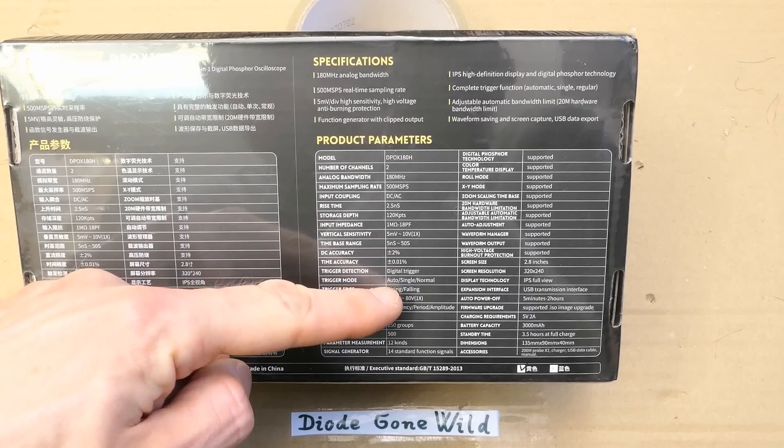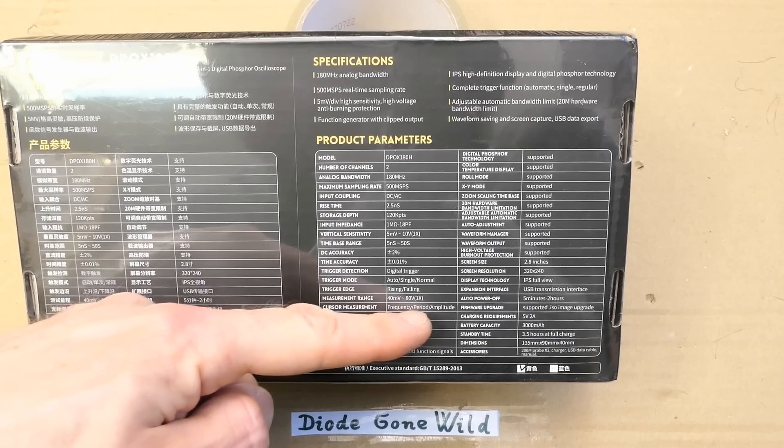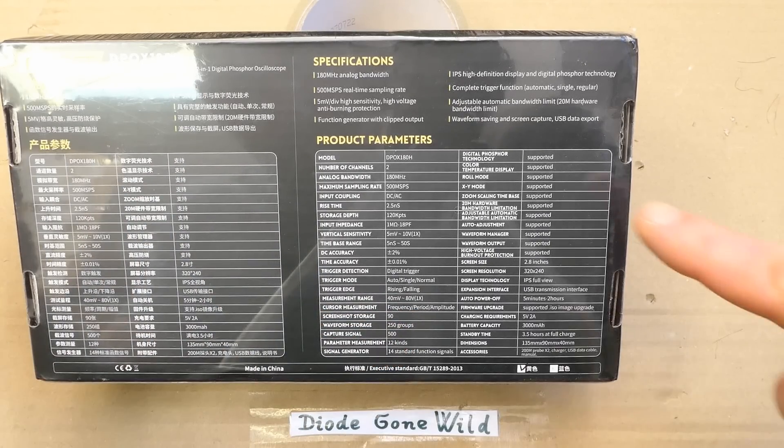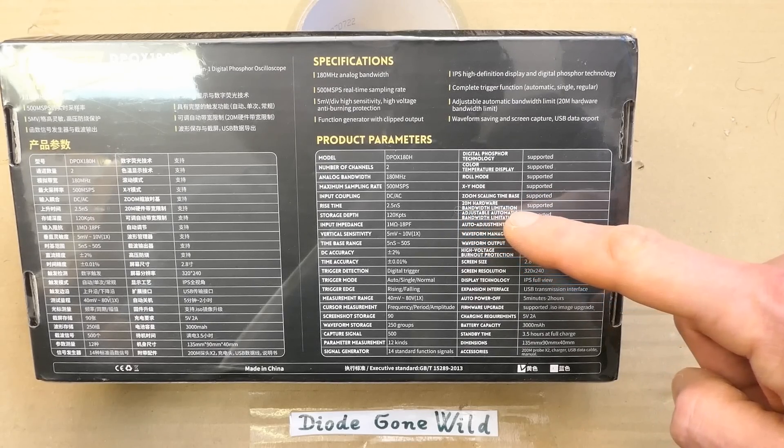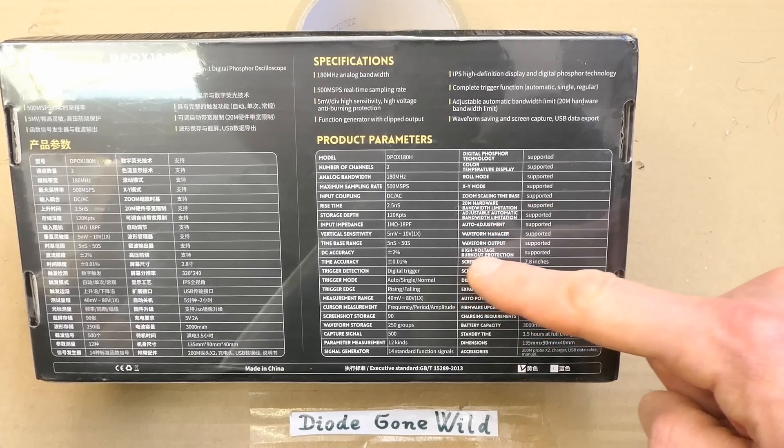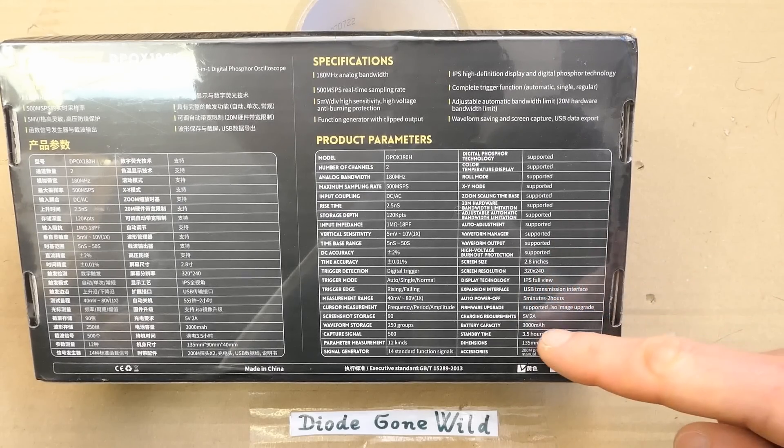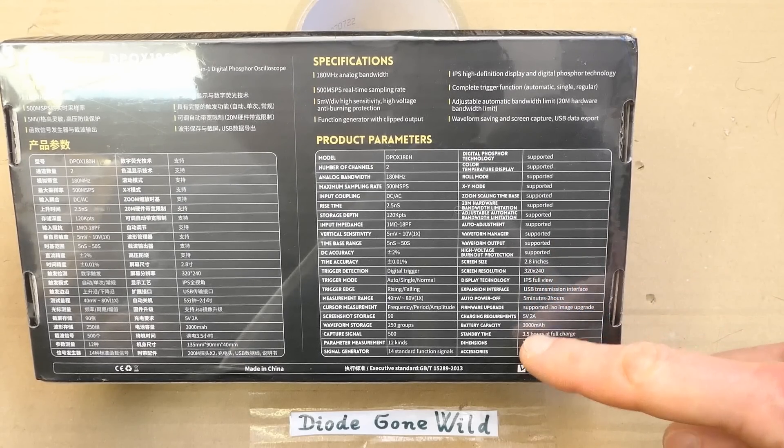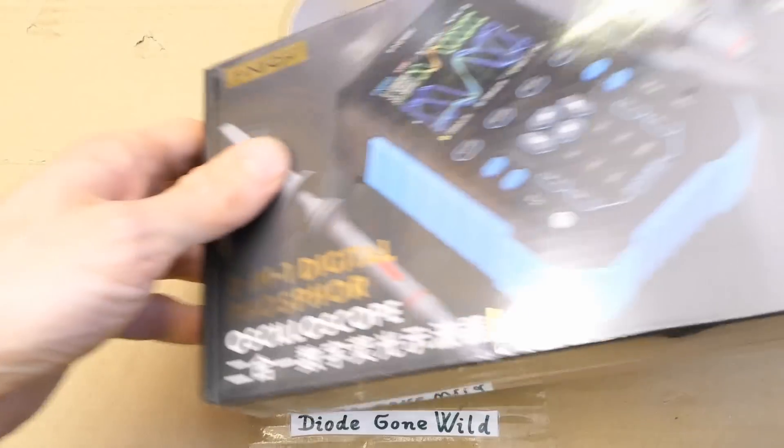The accuracy here, automatic single normal, raising falling, measurement range, frequency period amplitude, roll mode, XY mode, you can set a 20 MHz bandwidth limit, high voltage burnout protection, that's useful, the resolution of the display, 3000 mAh battery, 3.5 hours at full charge, but now of course let's open the box.